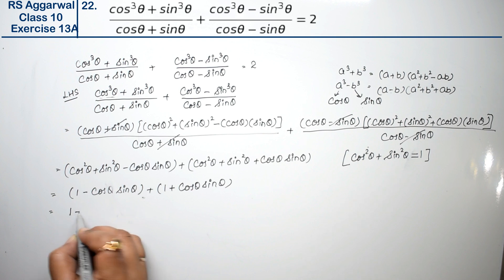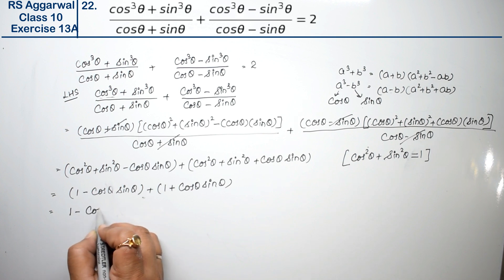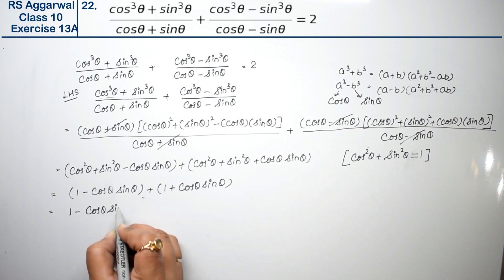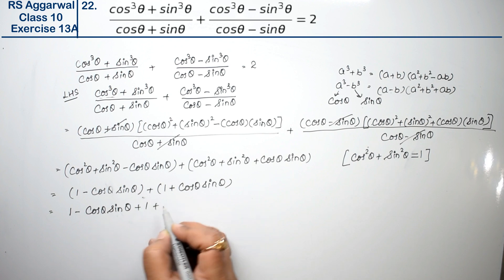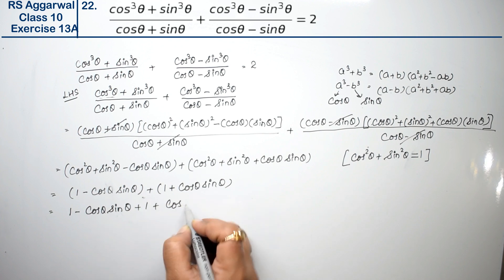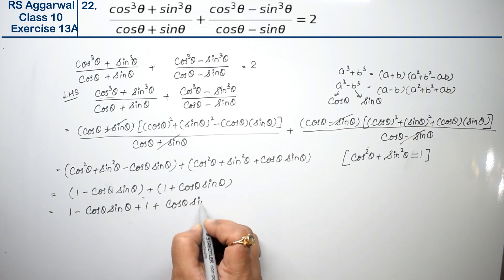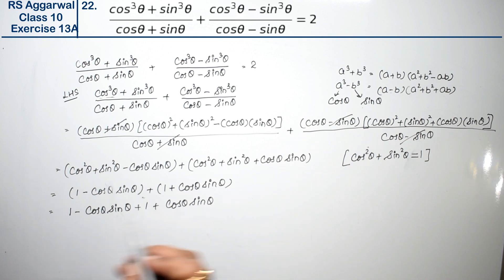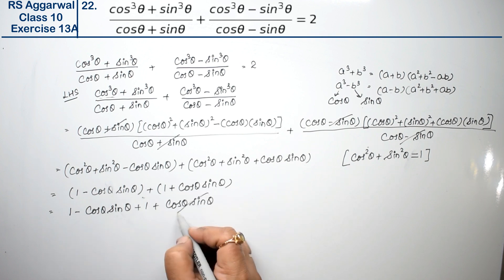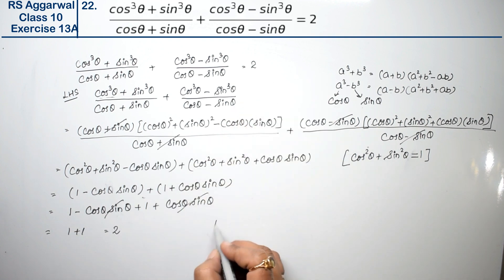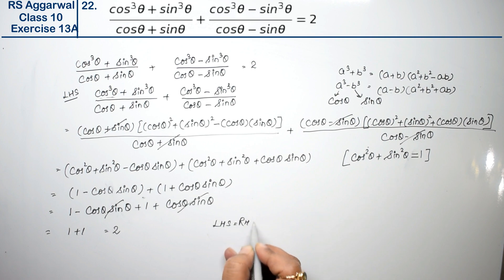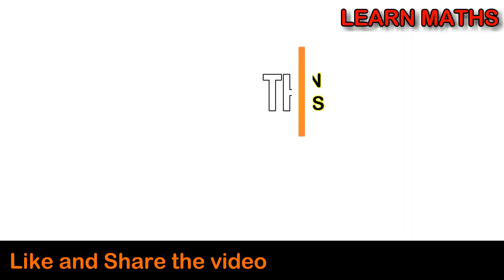So we have 1 - cosθ·sinθ + 1 + cosθ·sinθ. The cosθ·sinθ terms cancel, leaving 1 + 1 = 2. Hence, left-hand side equals right-hand side. This is what we had to prove. Thank you.